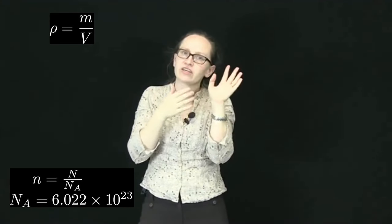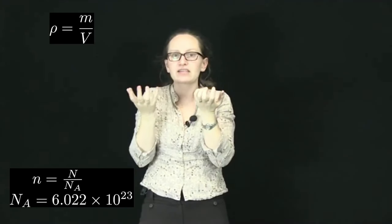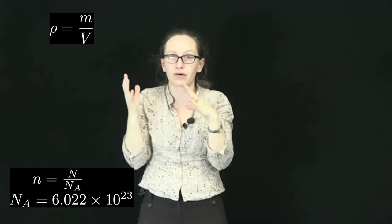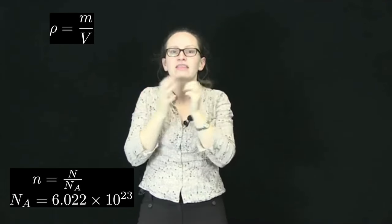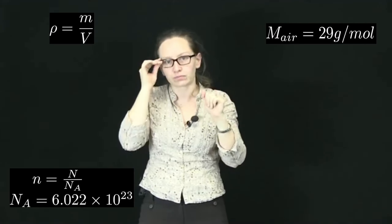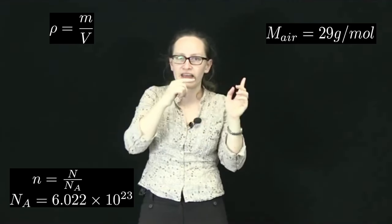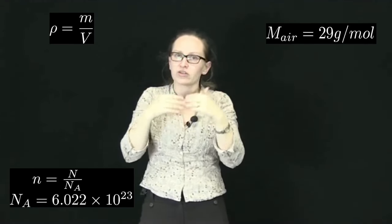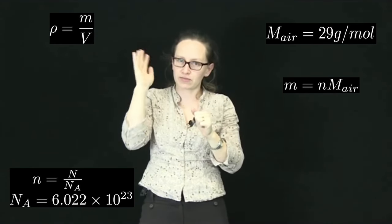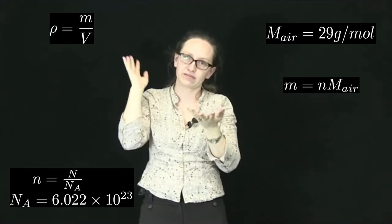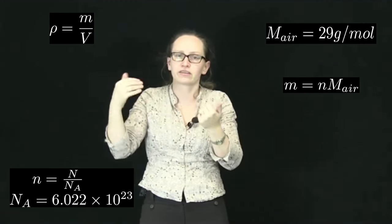The other 20% of the Earth's atmosphere is mainly made up of oxygen — O₂, two oxygen atoms stuck together — and the molar mass of oxygen is around 32 grams per mole. So on average, one mole of air molecules weighs 29 grams. We now know how much one mole of gas weighs and how many moles of gas there are inside our hot air balloon. The mass of the air inside the balloon is given by the number of moles times the molar mass, which is 29 grams per mole. The density is then this mass divided by the volume.